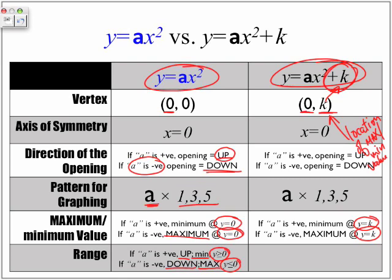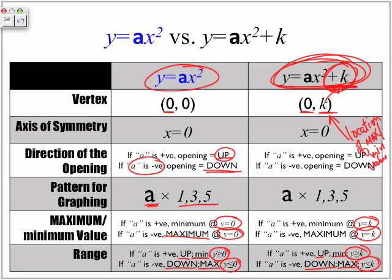In terms of when it's in this format here, y, if a is equal to a positive value, it's up, again, minimum. But y is any number greater than and equal to k, and when it's down, because the a value is negative, we have a maximum value, and it's y is less than and equal to whatever this k value is in terms of graphing.